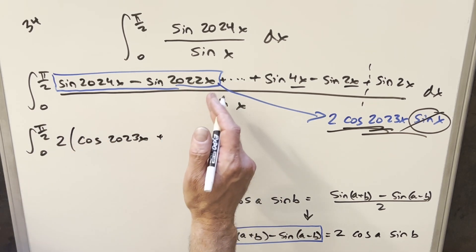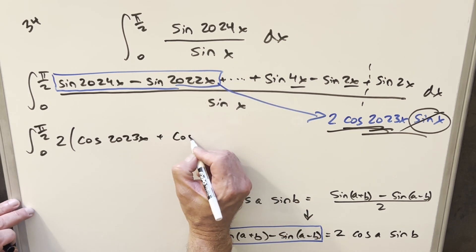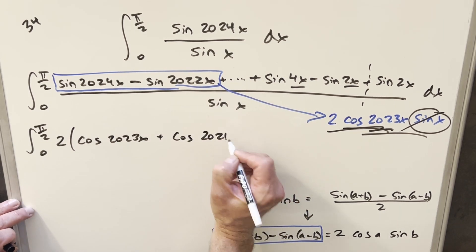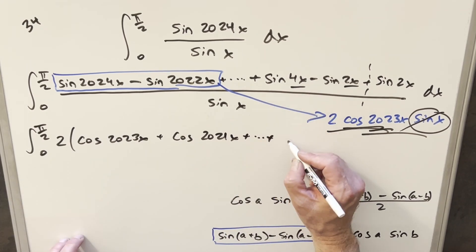And then for the next one, we're going to be going from 2022 to 2020. The middle value is going to be 2021. So it's going to be cosine 2021x. Then let's see, maybe just this last one. This is going to be cosine 3x down here.